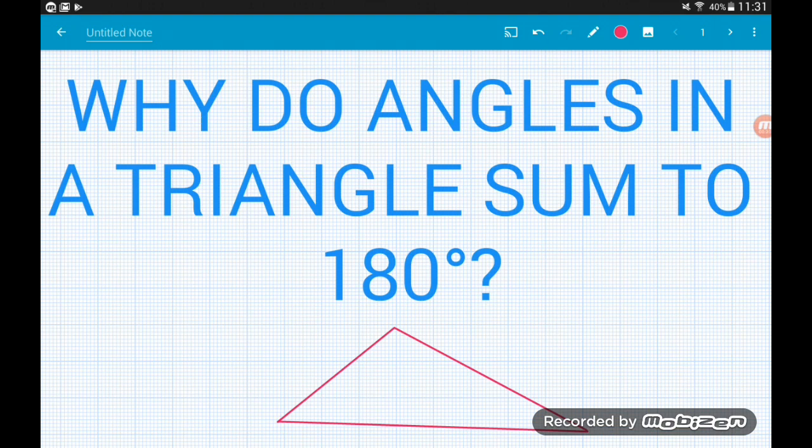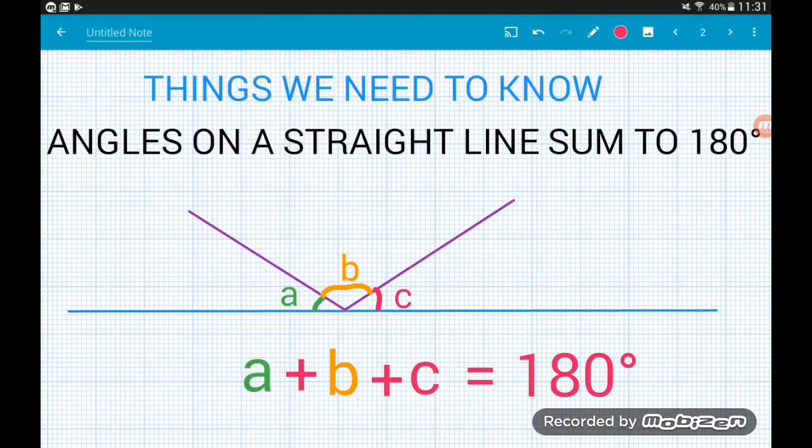We only need to know two simple little bits of information. So let's get cracking. The first thing that we need to know is that angles on a straight line sum together to give us 180 degrees.